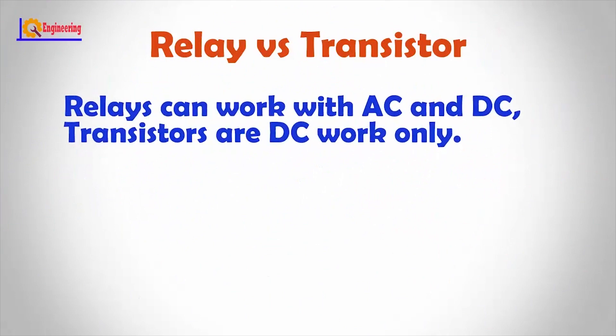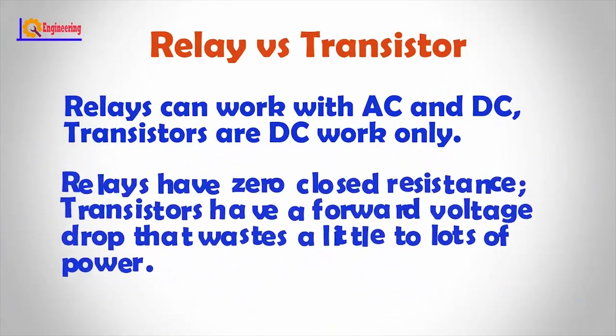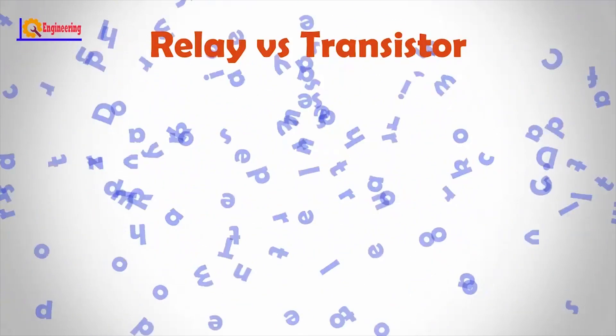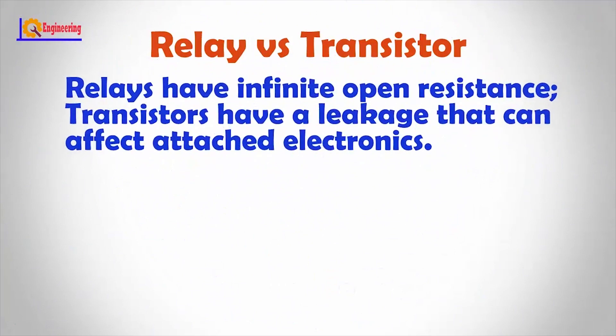Relays can work with AC and DC, whereas transistors work with DC only. Relays have zero closed resistance, while transistors have a forward voltage drop that wastes a little to a lot of power. Relays have infinite open resistance, whereas transistors have a leakage that can affect attached electronics.